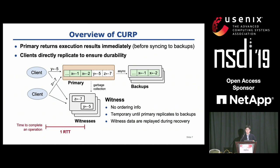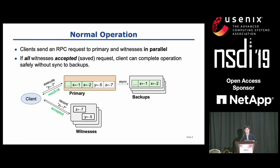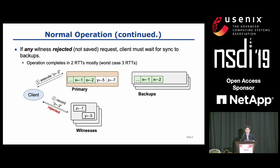After syncing to backups, the primary garbage collects the operation in witnesses. During the recovery of a primary crash, the information in witnesses is used to recover the last few operations that are missing in backups. Now let's look at how clients complete update operations. Clients in CURP send a request to a primary and all witnesses in parallel. If all witnesses accepted and saved the request, then the client can complete the operation without waiting for syncs to backups. But a witness may reject the request if it doesn't meet CURP's commutativity requirement, which I will discuss in a couple of slides.